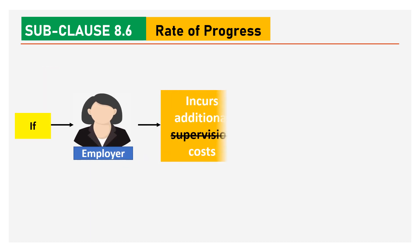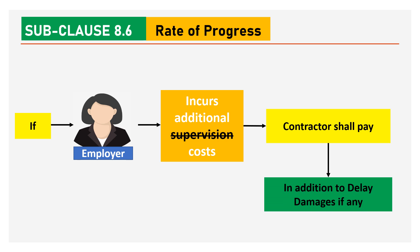The contractor shall adopt the revised method at the risk and cost of the contractor. If the employer incurs additional cost — note that the word 'supervision' has been deleted — the contractor shall pay the same to the employer in addition to the delay damages.